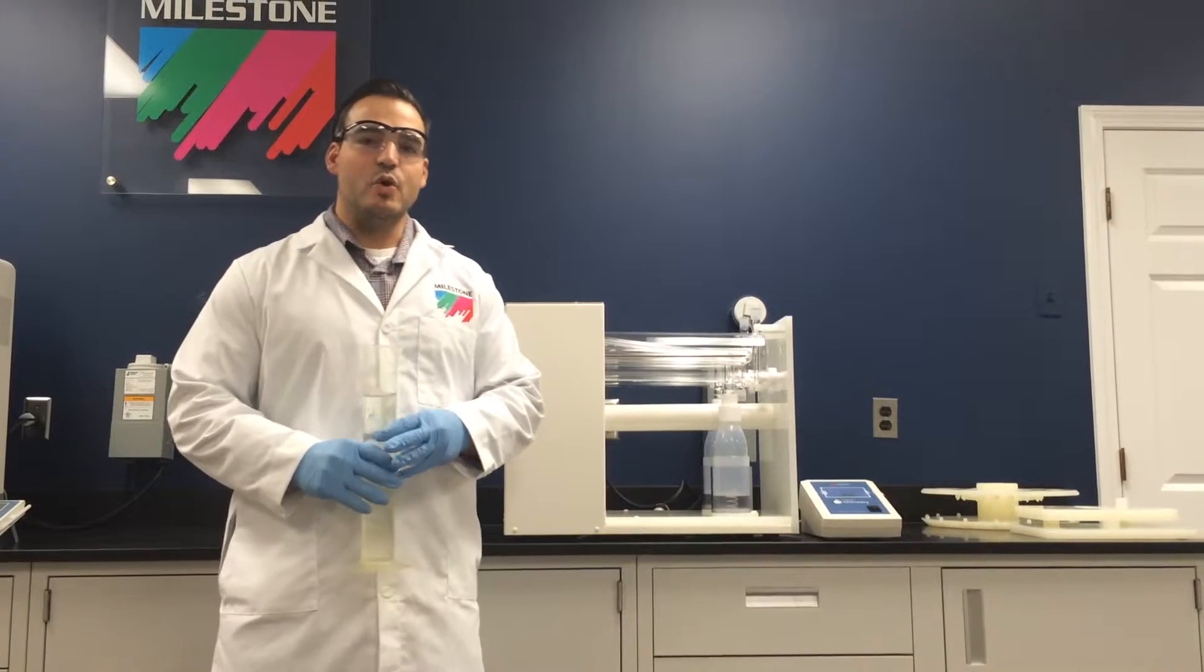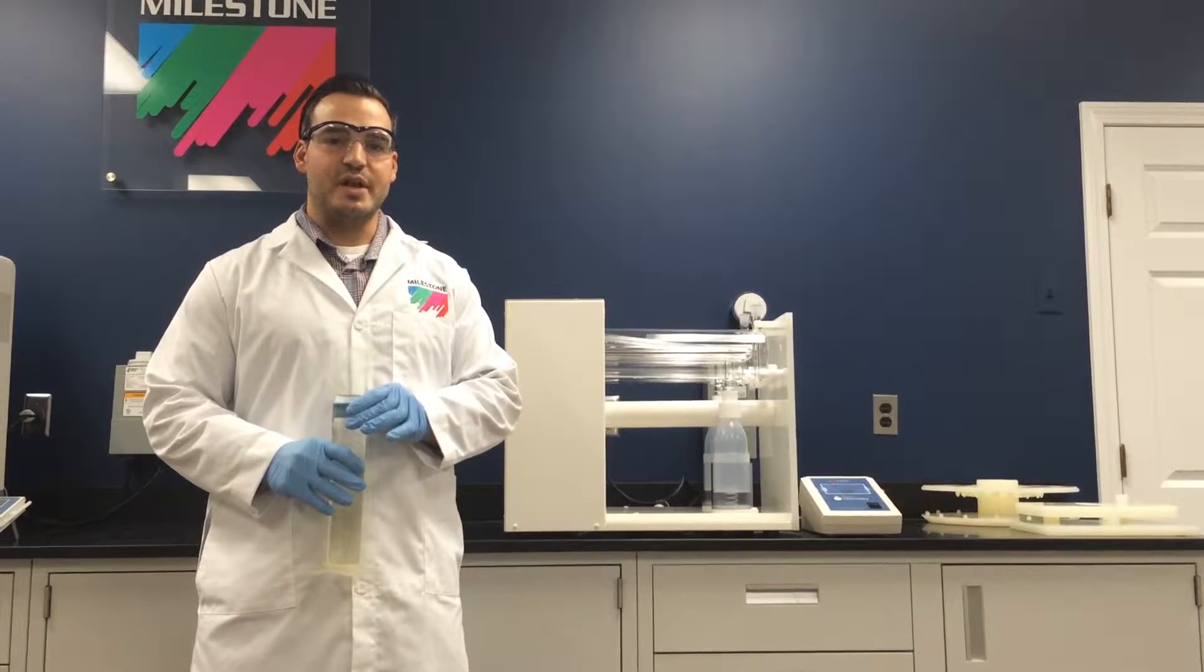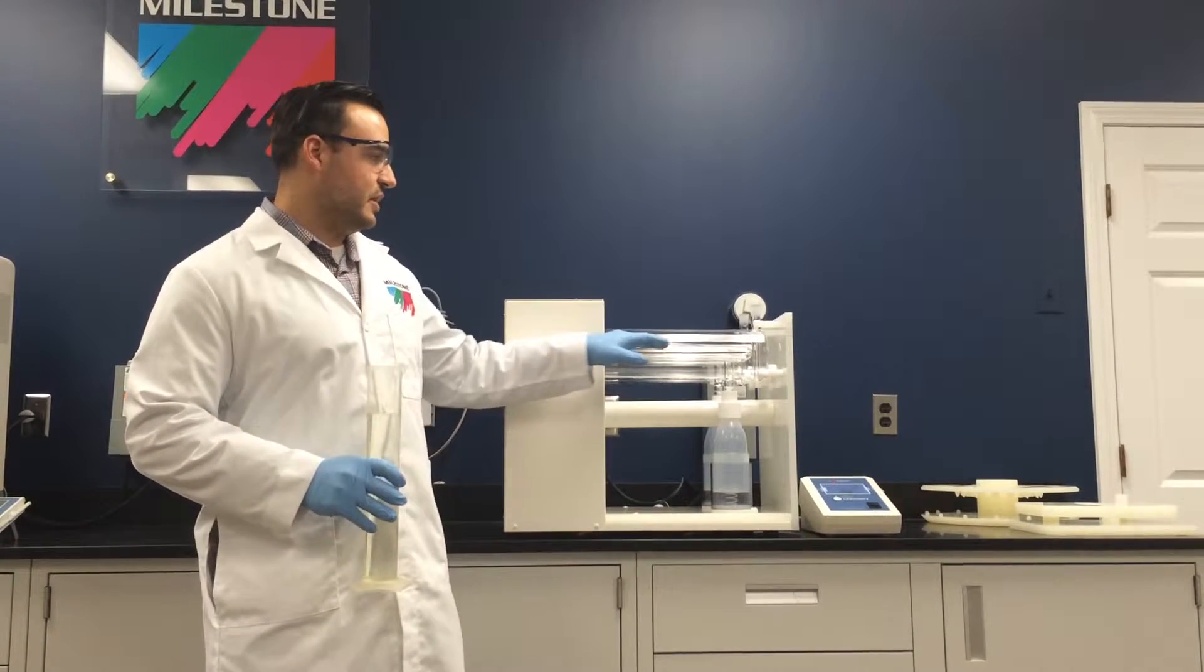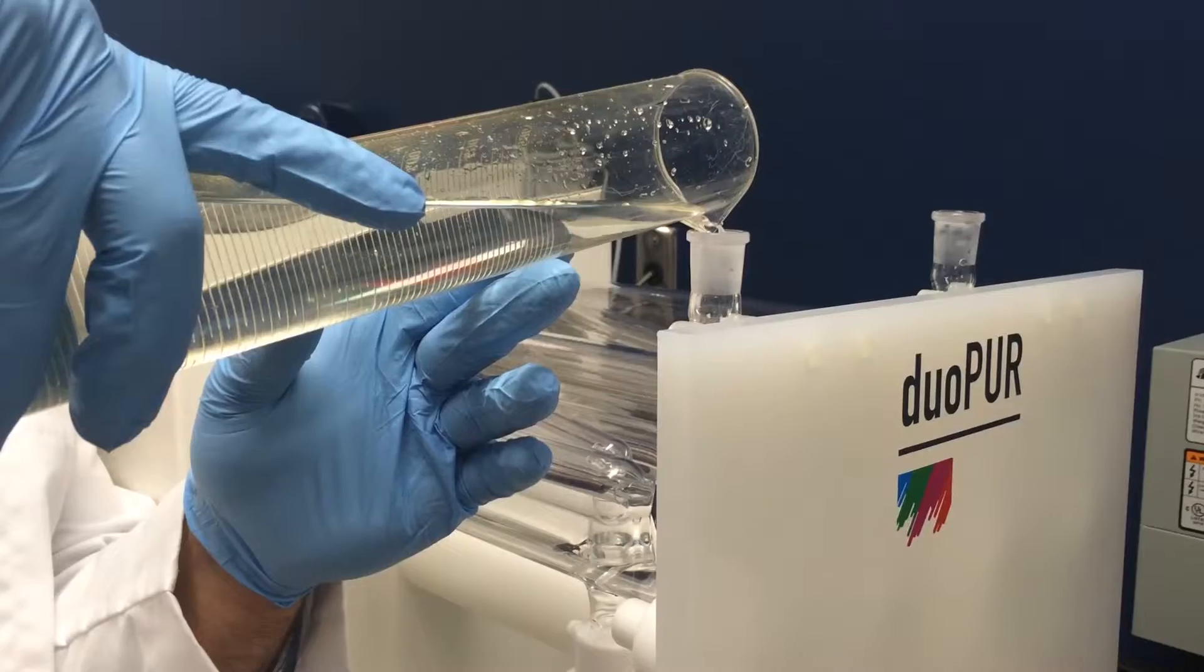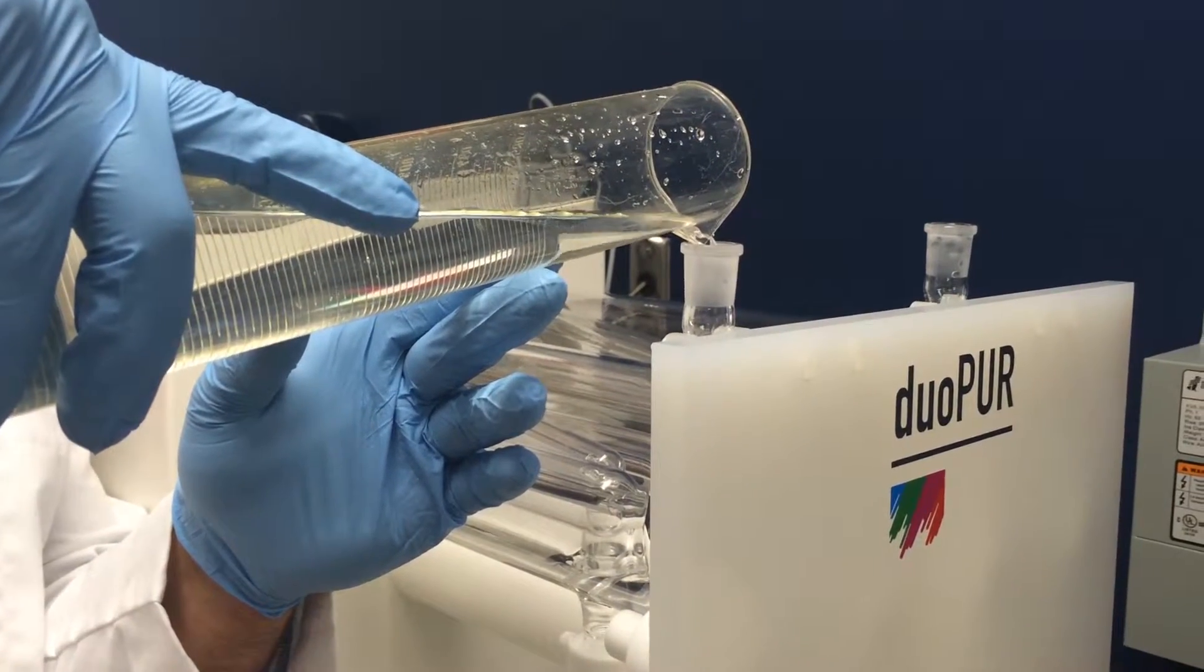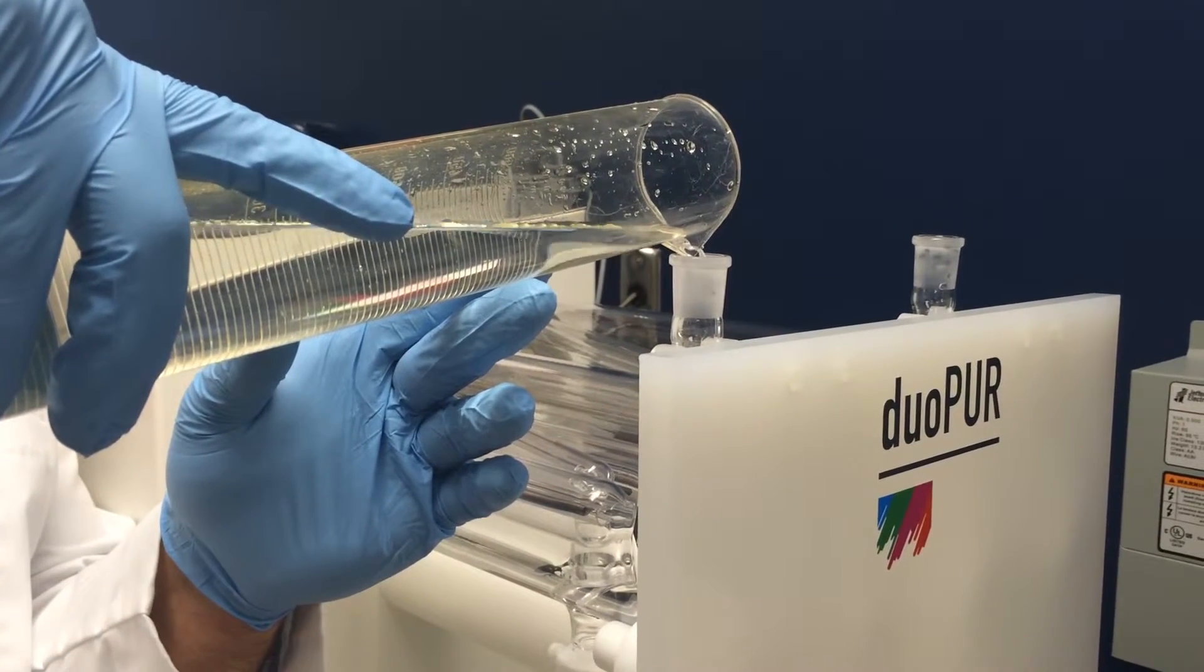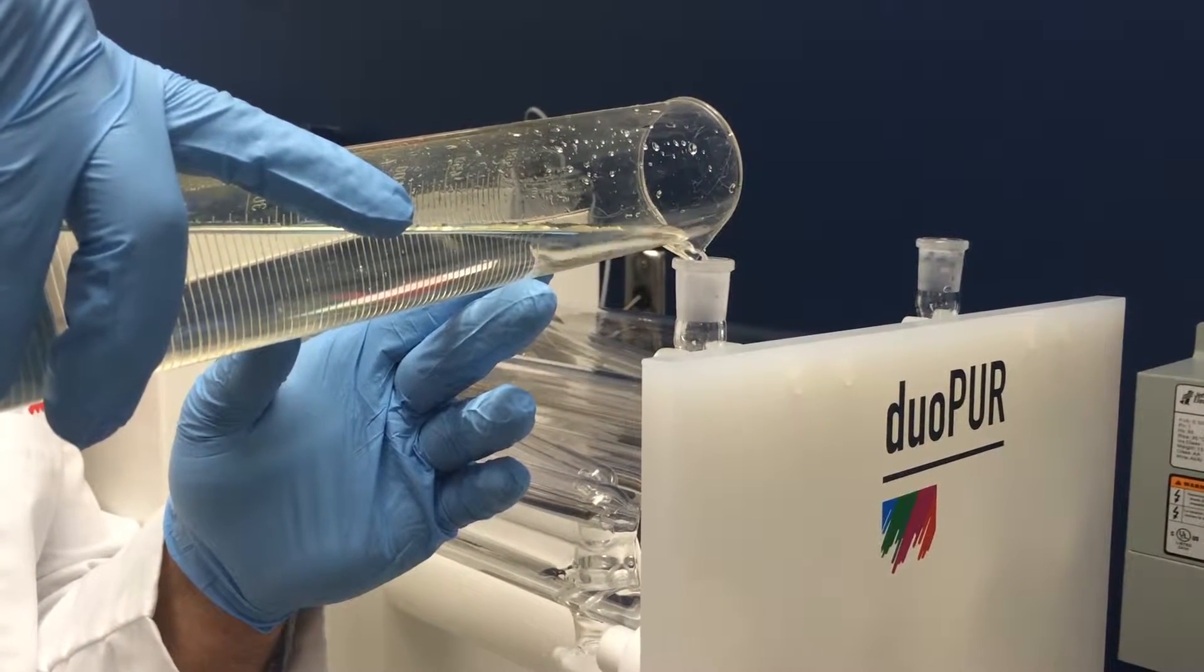The first step in using the DuoPure is to load your sample acid into the distillation chamber. Carefully load the acid into the top chamber of the DuoPure.